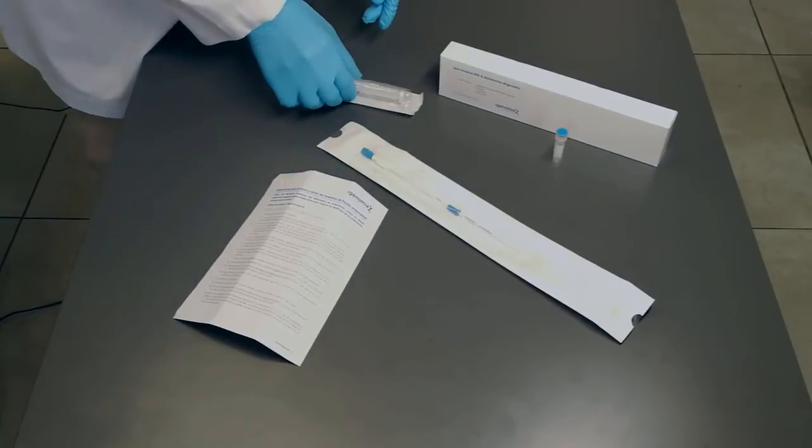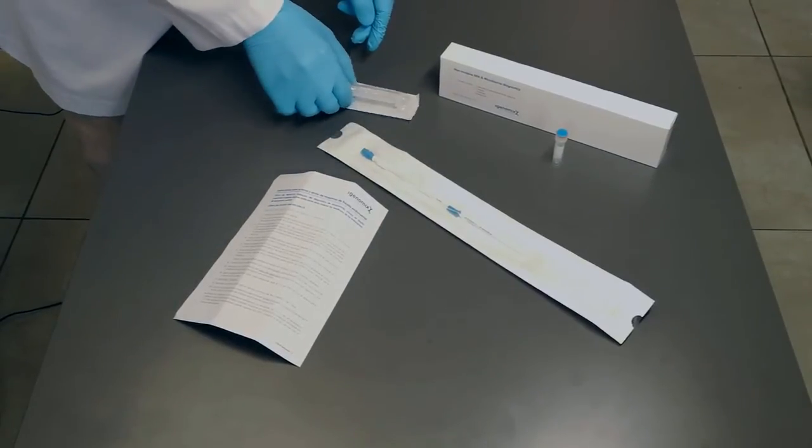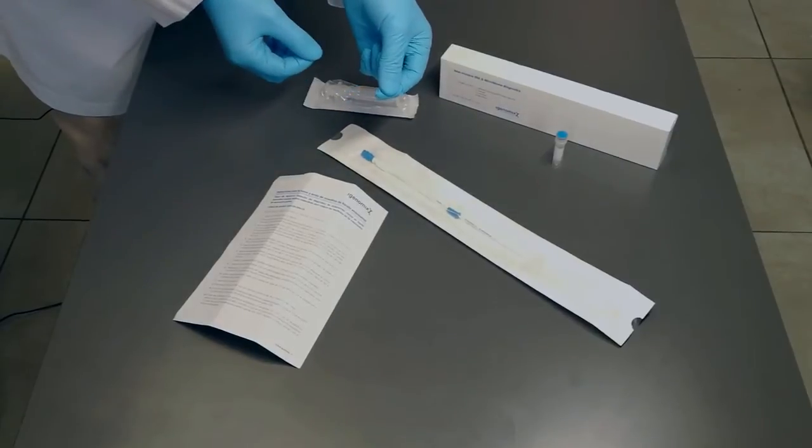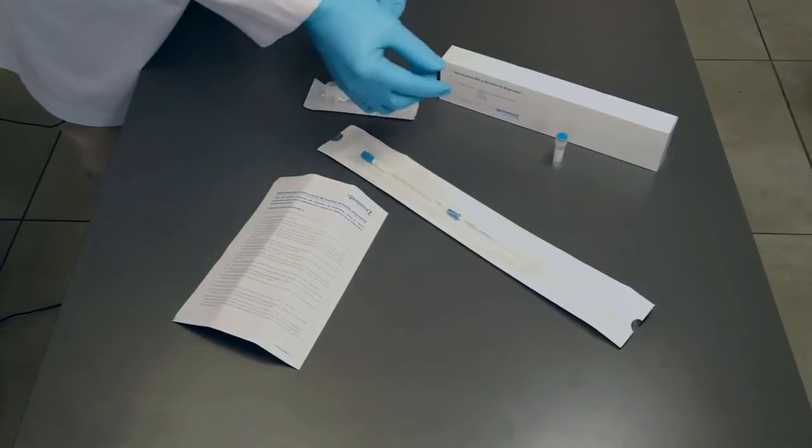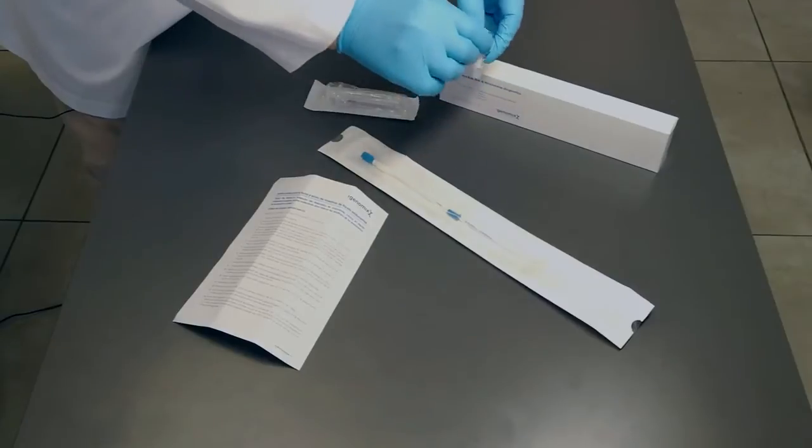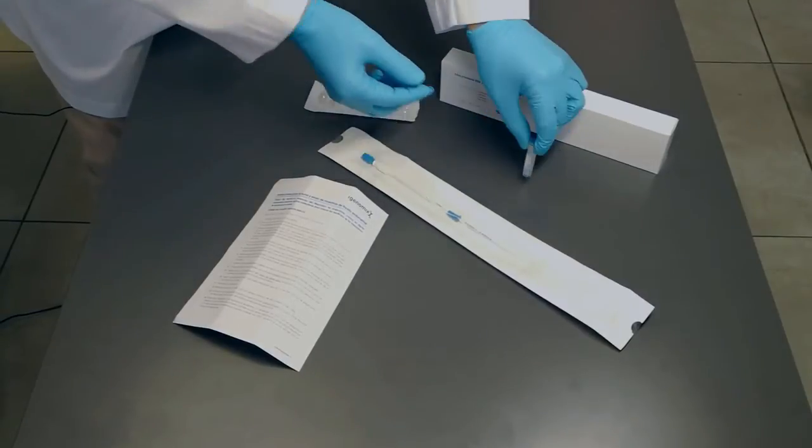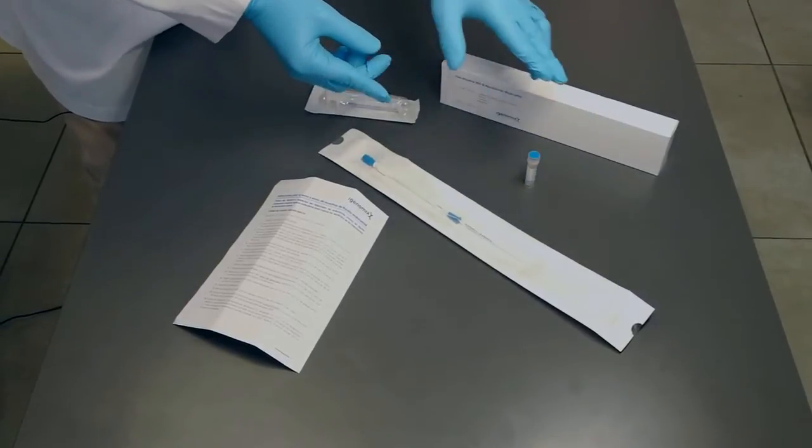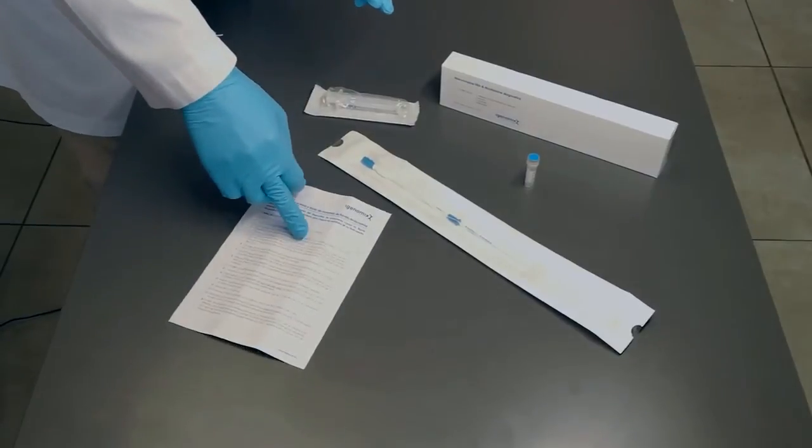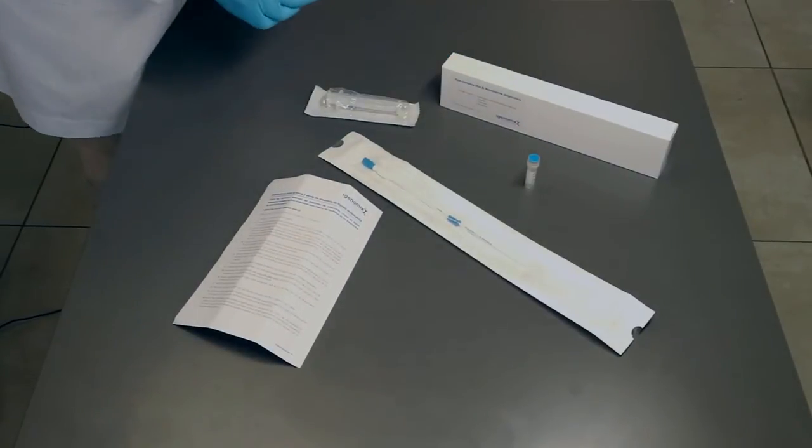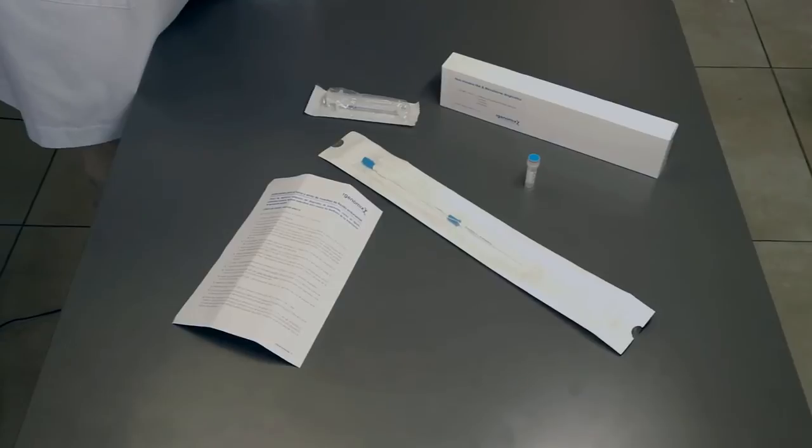A 10 ml syringe will be connected to the transfer catheter to do the proper vacuum to extract the endometrial fluid. Once the fluid is obtained, it must be introduced into the provided cryotube. Instructions will also be included. All this material will be provided to the gynecologist in this kit.